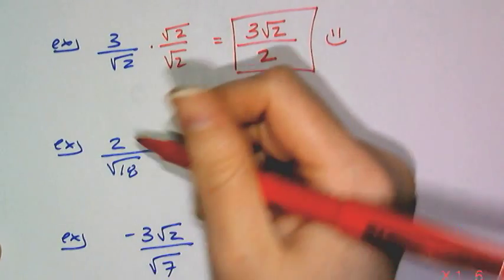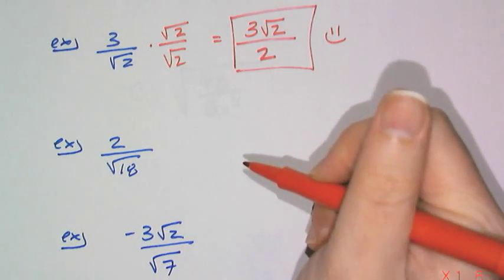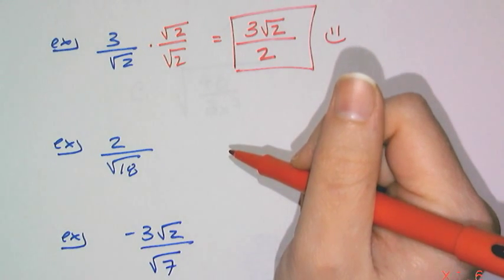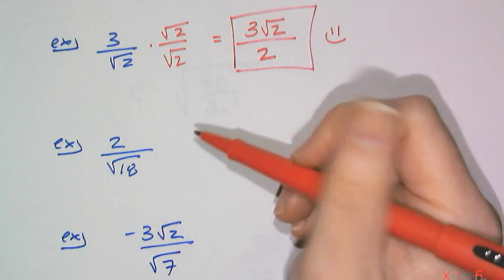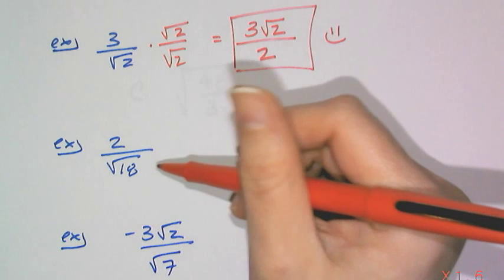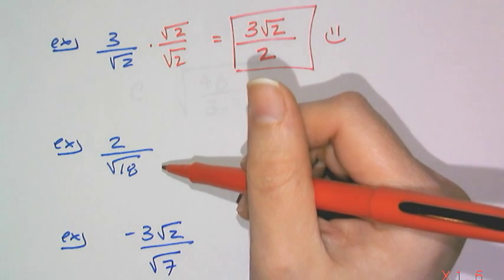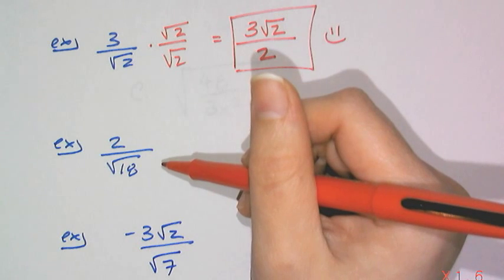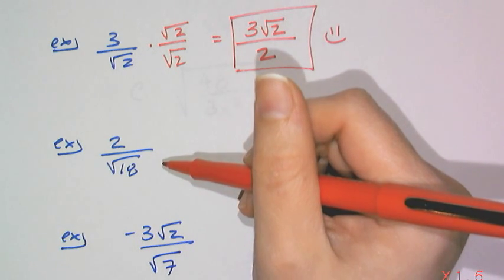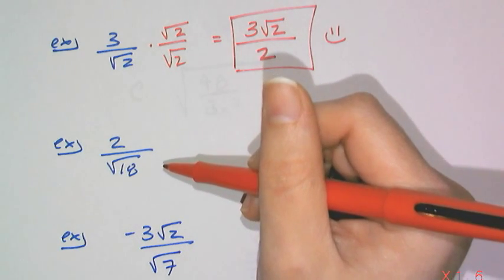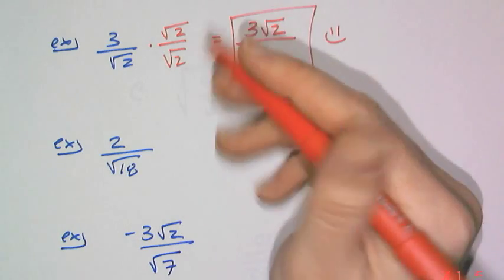Now, this next example, 2 over the square root of 18, you actually have different options here. You might recognize that the square root of 18 is not simplified, and you can simplify that radical. You can just go ahead and multiply it by root 18 times root 18, and then simplify that. Or you can do what I'm about to do.